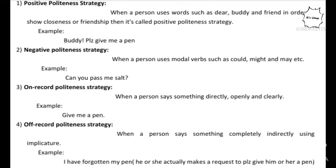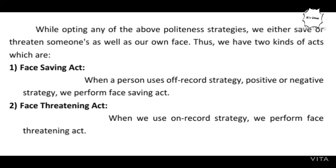The last type is called off-record strategy. Off-record strategy is a kind of politeness strategy where we make a request in a completely indirect way. For instance, you say 'I have forgotten my pen.' When you say this to someone nearby, he will directly give you his pen if possible, even though you have not made a direct request — you have used off-record strategy.